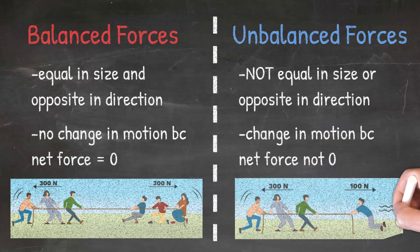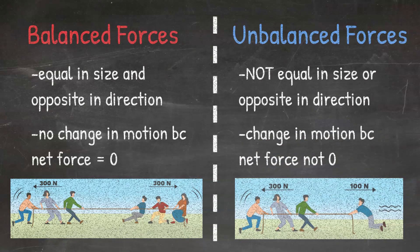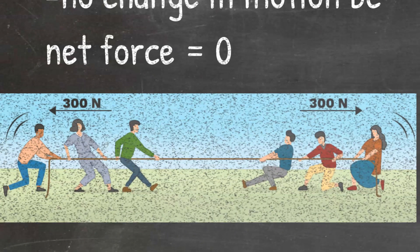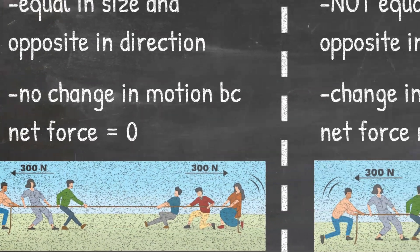Here are examples of balanced and unbalanced forces. Here we see an example of balanced forces. We see 300 Newtons being pulled to the left and 300 Newtons being pulled to the right. These are equal in size at 300 Newtons and they are being pulled in opposite directions. If we were to subtract these numbers, we would get zero Newtons, which means that we have a net force of zero. This is another reason we know the forces are balanced.